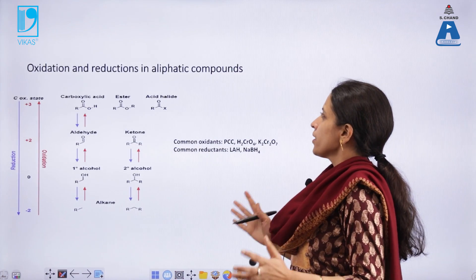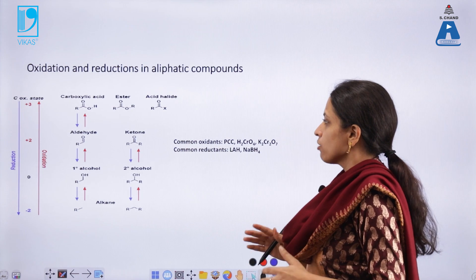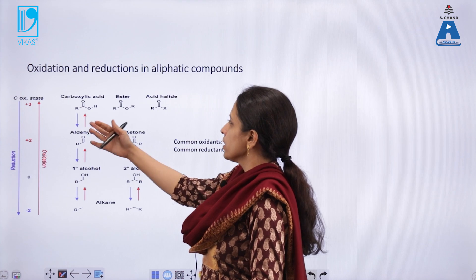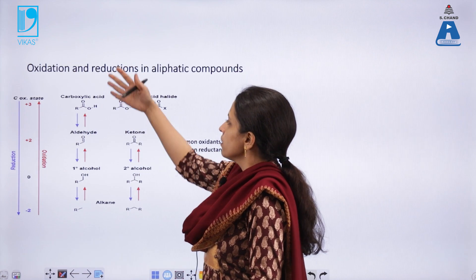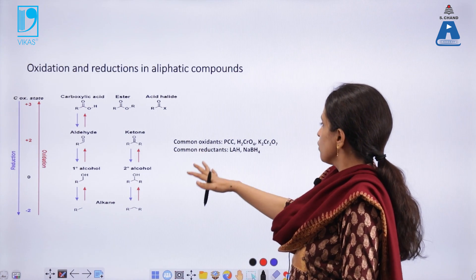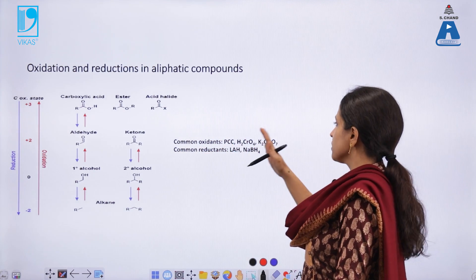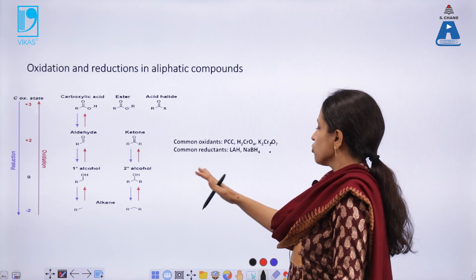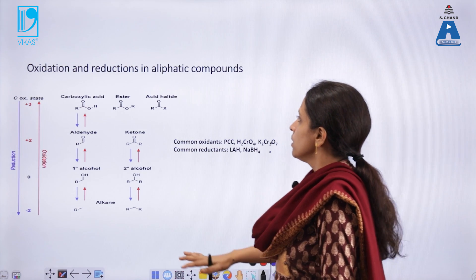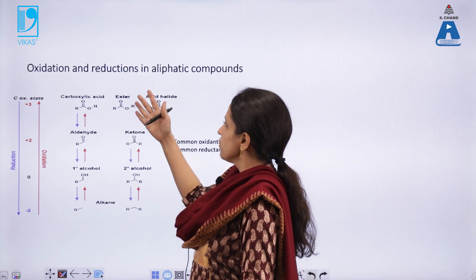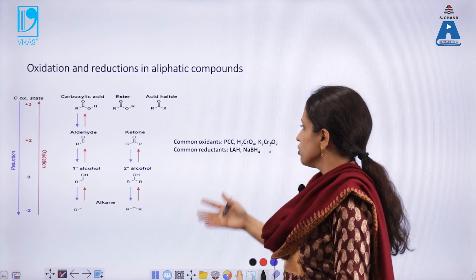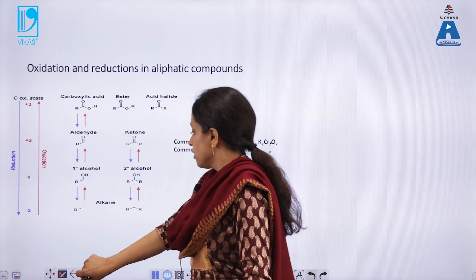The usual oxidation-reduction reactions encountered in aliphatic compounds are reversible — you can oxidize an alkane to alcohol, to aldehyde, to carboxylic acid, and it can also be reduced the other way. The most common oxidizing reagents are pyridinium chlorochromate, chromic acid, and potassium dichromate. The most common reducing agents are lithium aluminum hydride and sodium borohydride. Esters and acid halides can further be reduced to aldehydes or ketones under appropriate conditions.